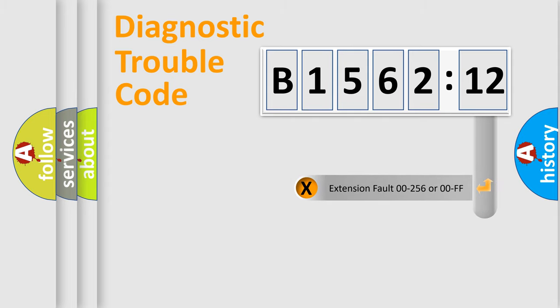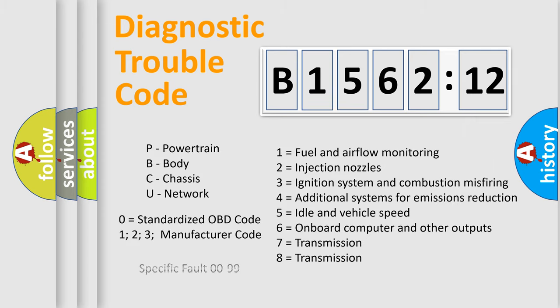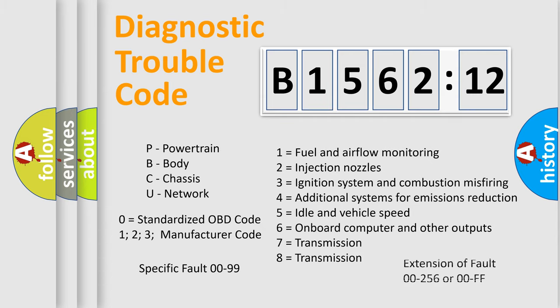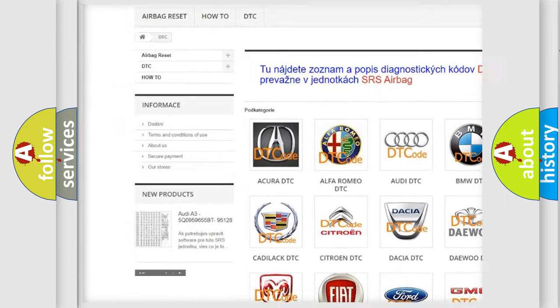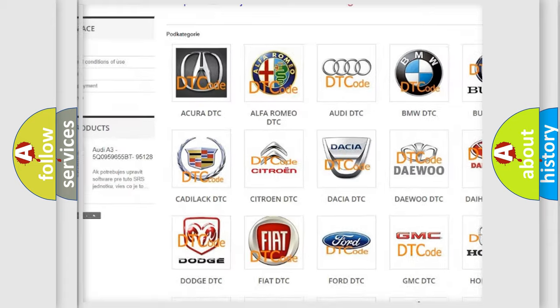Our website airbagreset.sk produces useful videos for you. You do not have to go through the OBD2 protocol anymore to know how to troubleshoot any car breakdown. You will find all the diagnostic codes that can be diagnosed in Chrysler vehicles, and also many other useful things.